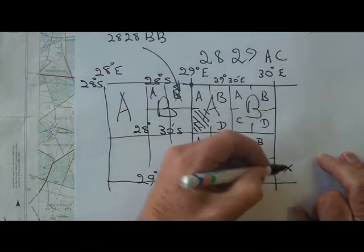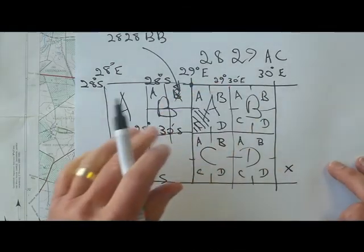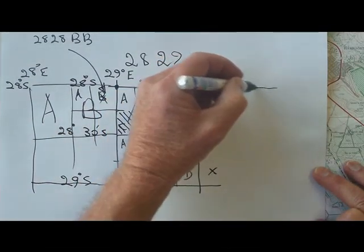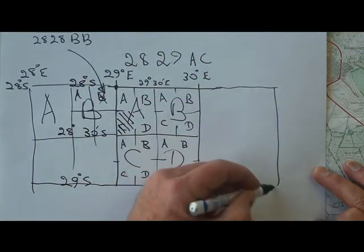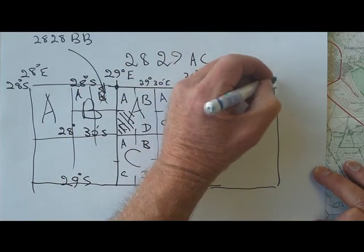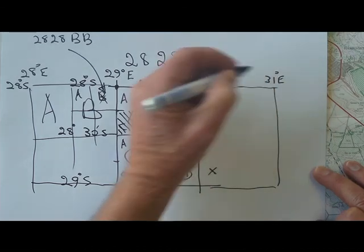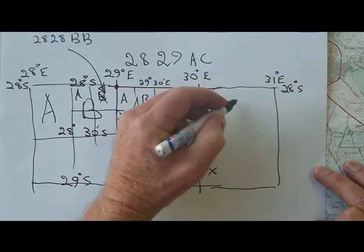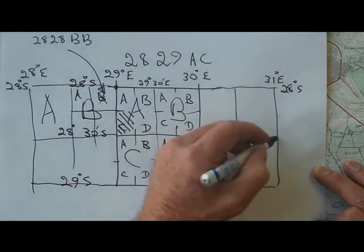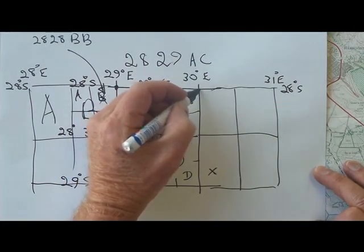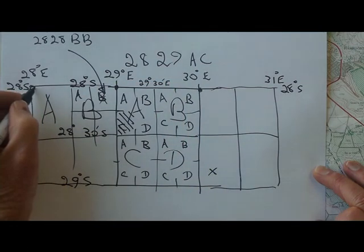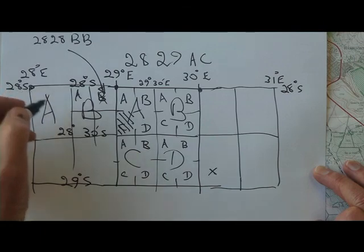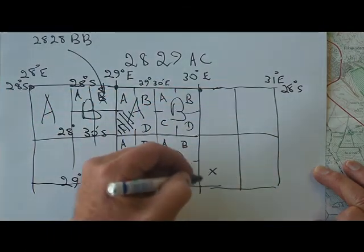This one down here, again, we can extend the diagram in the other direction by another whole degree, 31 degrees east. We are still 28 degrees south. So this is the point we are interested in.